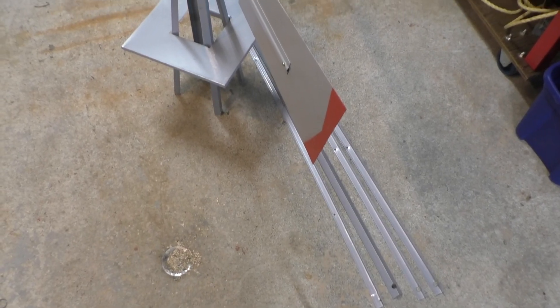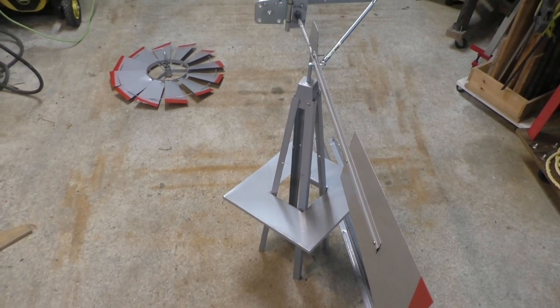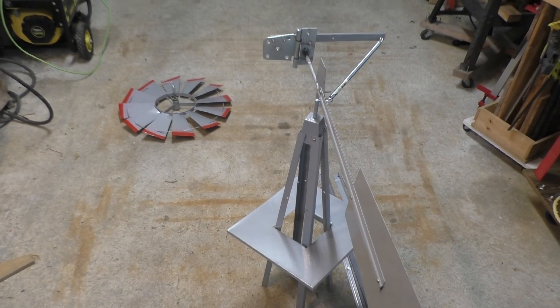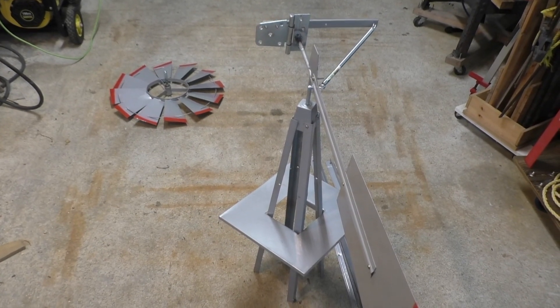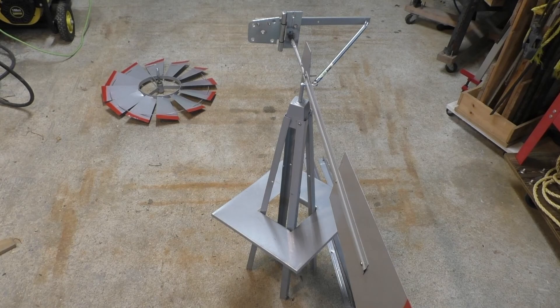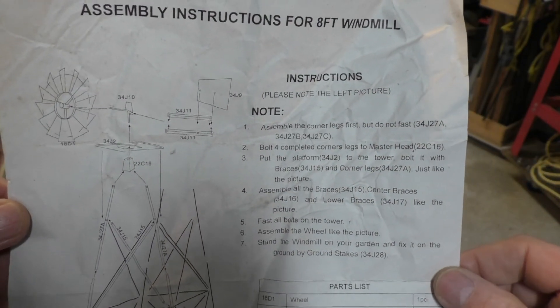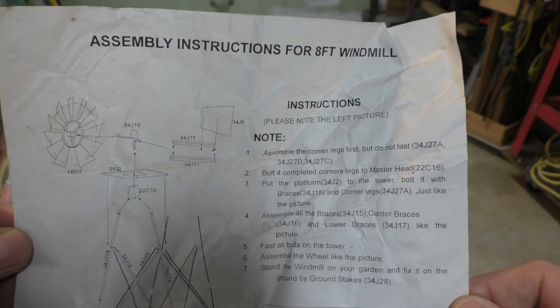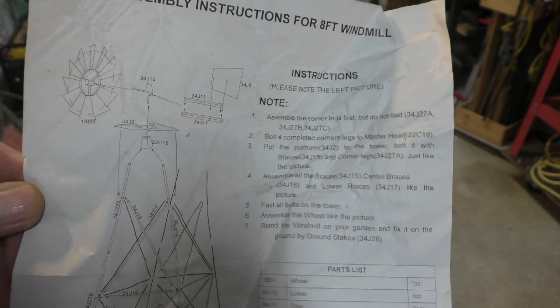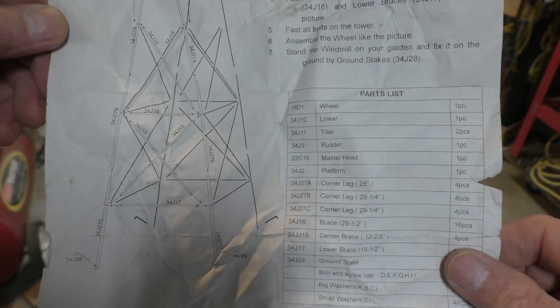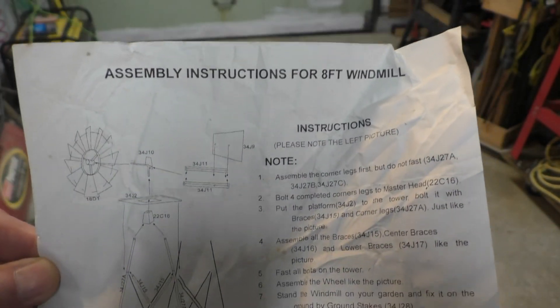So next I need to get the legs and the supporting struts and so on assembled. I'll be using nylock nuts for pretty well everything to keep the overall windmill in one piece, hopefully in high winds. The assembly instructions are kind of sparse, but using the picture on the box and instructions provided, it doesn't appear to be too difficult to assemble the windmill.